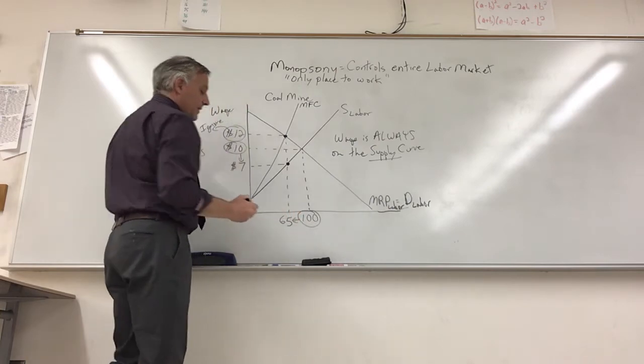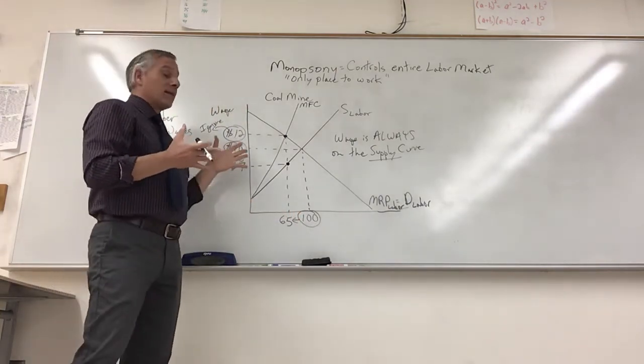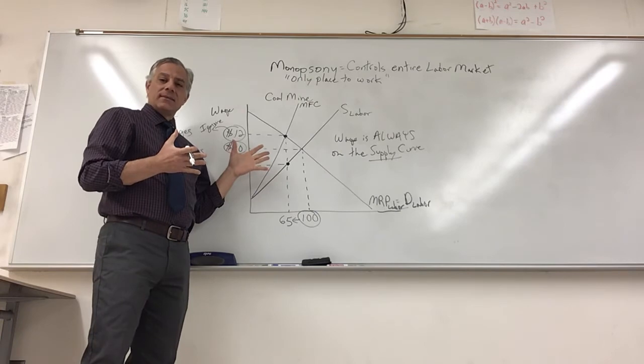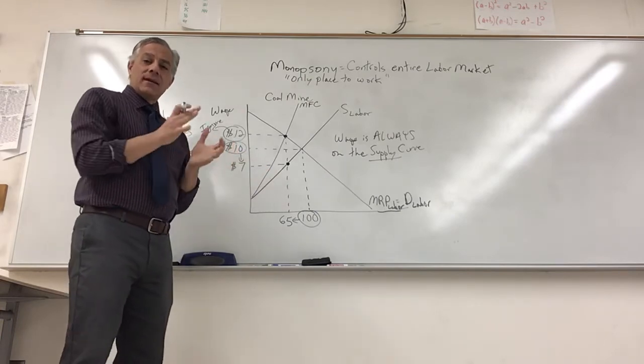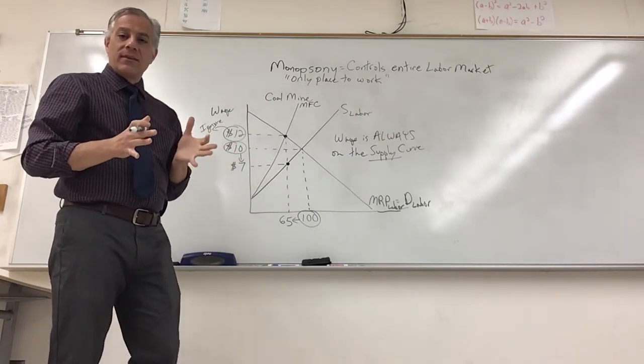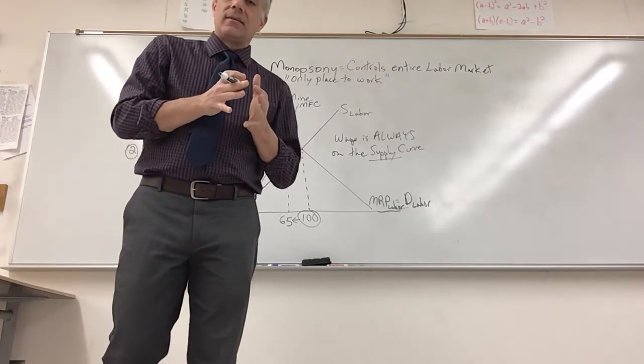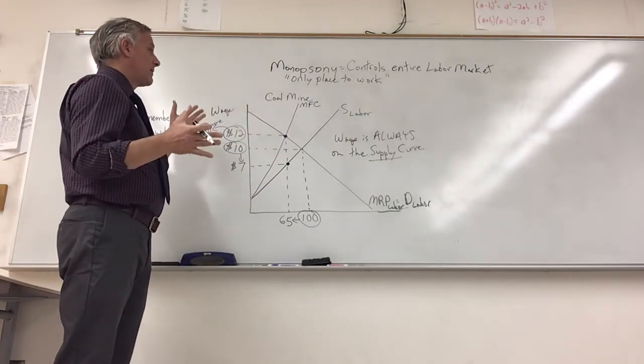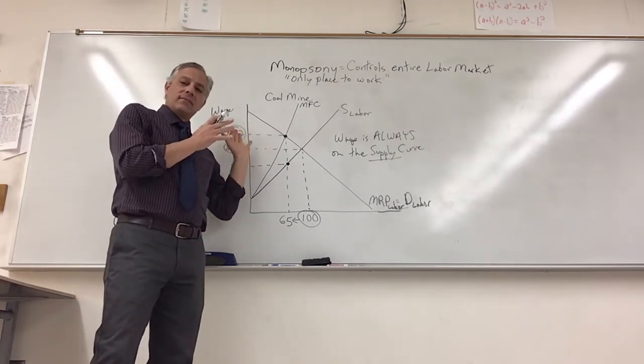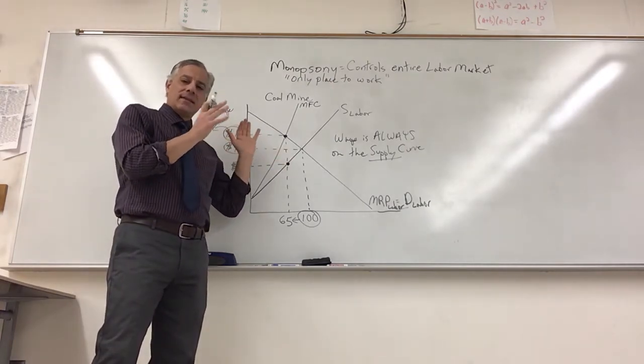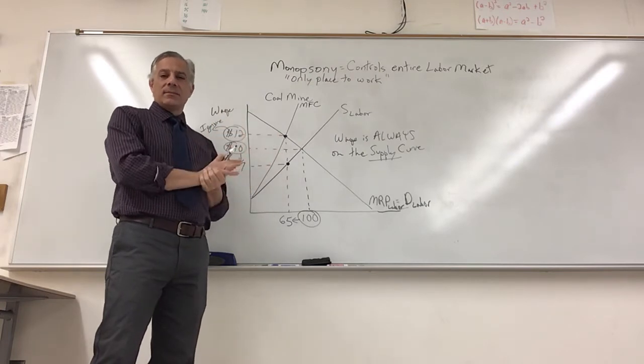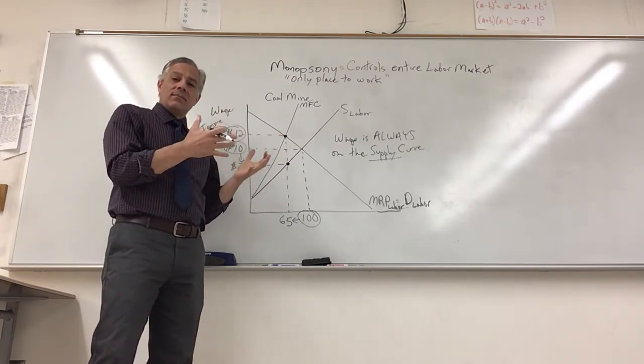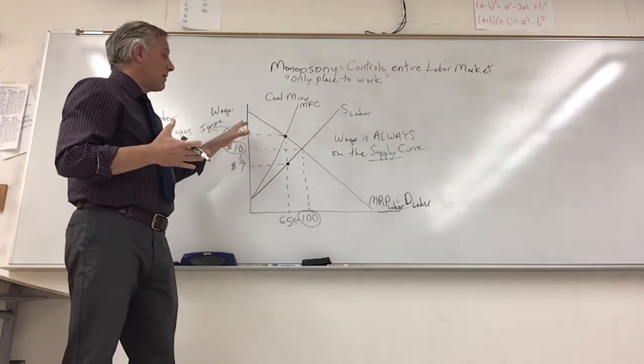So the wage goes down from ten dollars to seven dollars, and the number of employees goes from 100 to 65. And this shows us graphically what a monopsony looks like. It's an unfair situation, bad for the employees, and a good situation in terms of profitability. It allows for abuse, death. These are terrible circumstances, and in the world of social justice, a monopsony is an awful situation.